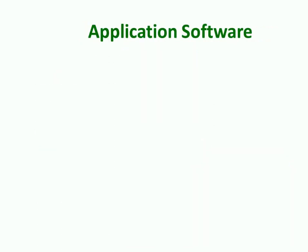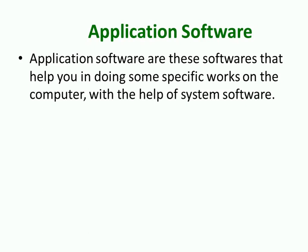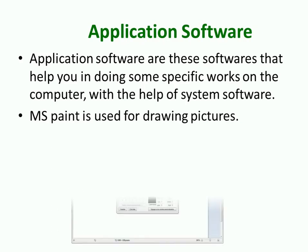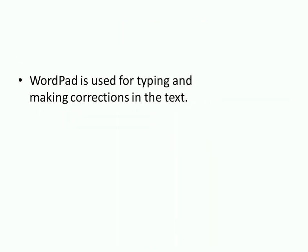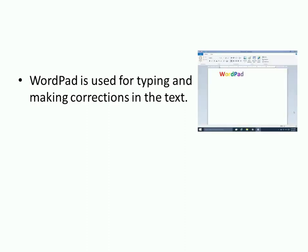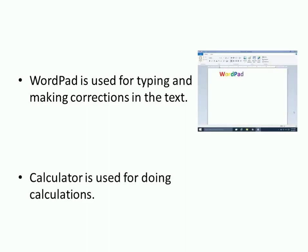Application Software are programs that help you in doing specific tasks on the computer with the help of System Software. MS Paint is used for drawing pictures. WordPad is used for typing and making corrections in the text.